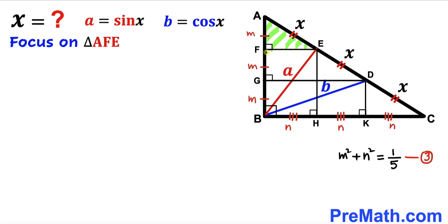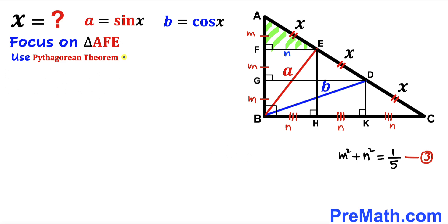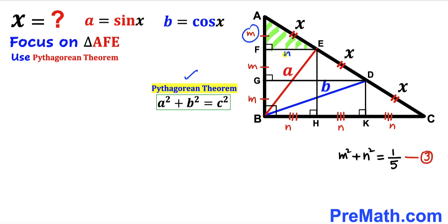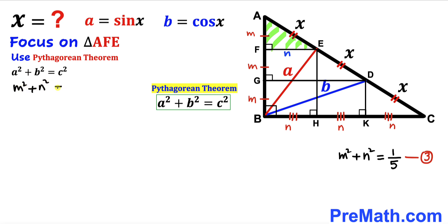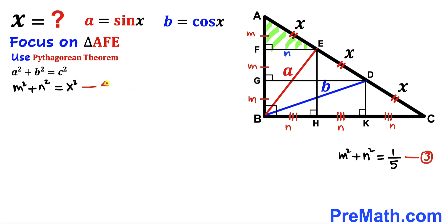Now let's focus on right triangle AFE. Side length FE equals n. Applying the Pythagorean theorem, with two legs m and n and hypotenuse x: m² + n² = x². This is Equation 4.